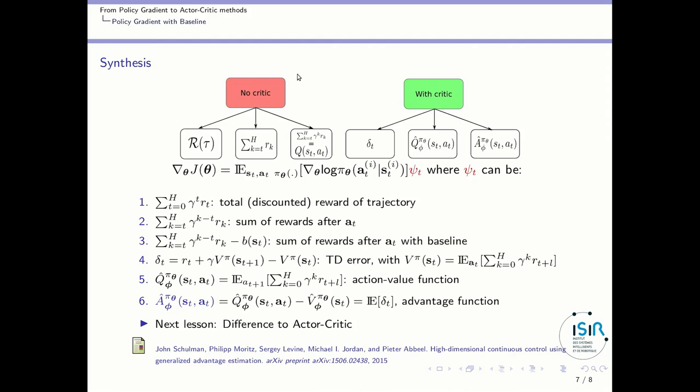So, to synthesize all those policy gradient algorithms of the reinforced family, as we have seen, there are several approaches. There are approaches where you have no critique, so you can take just the sum of rewards over the trajectory. You can also take a discounted sum of rewards, and this is the same as using the exact Q function, or action value function.